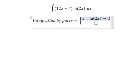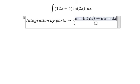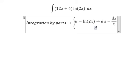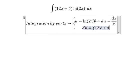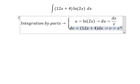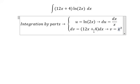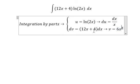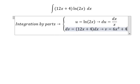dv equal to 12x plus 4 dx, and we have v equal to 6x squared plus 4x.